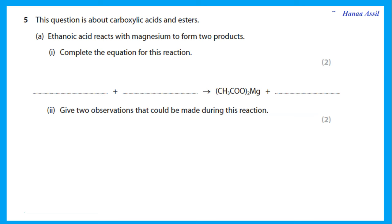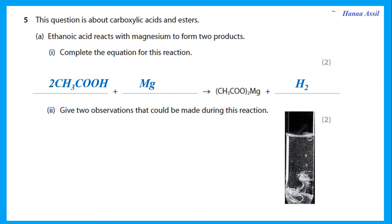Question 5 is about carboxylic acids and esters. Ethanoic acid reacts with magnesium to form two products. Ethanoic acid is CH₃COOH. Acid plus metal gives salt plus hydrogen gas, so we need 2CH₃COOH + Mg to balance. The observations: bubbles of gas are produced (hydrogen) and the piece of magnesium disappears or becomes smaller.